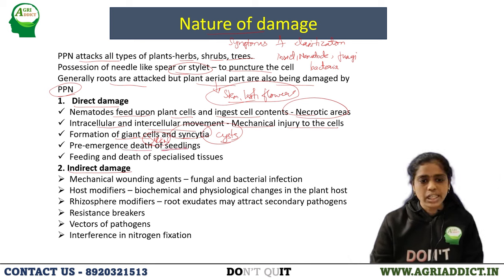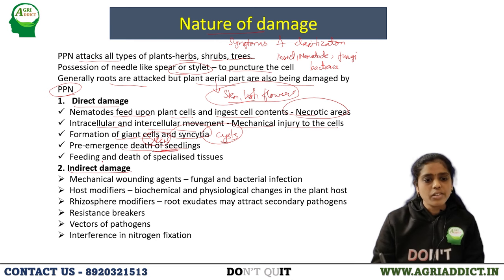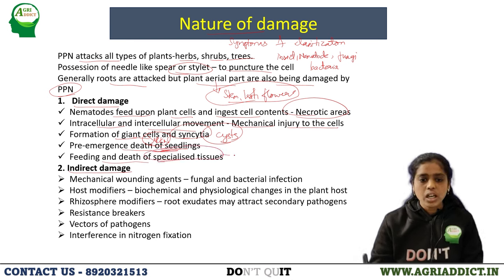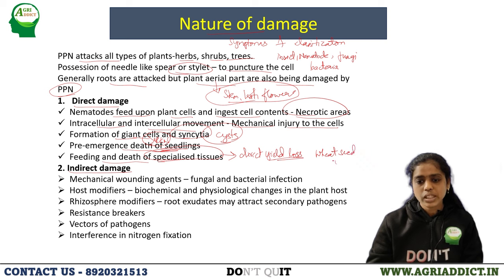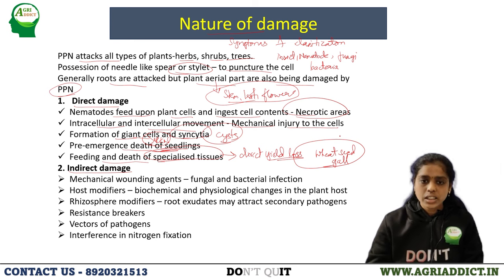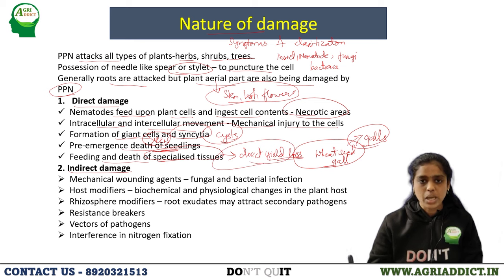Pre-emergence death of seedlings occurs in case of sting nematodes, which mainly attack the growing tip of plants. Feeding and death of specialized tissues may cause direct yield loss. For example, in case of wheat seed gall nematode, Anguina tritici, as it enters into the floral primordia, instead of developing into seeds, those will develop into galls, resulting in direct yield loss. In pine wilt disease, caused by Bursaphelenchus xylophilus, resin production is drastically reduced.